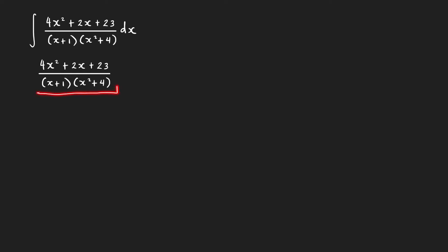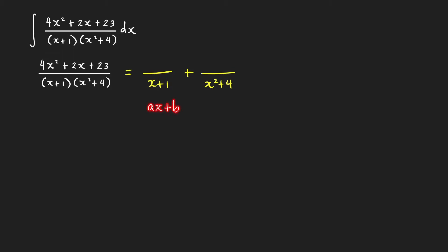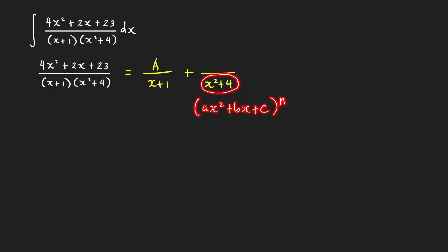What is the form of the partial fraction decomposition? Because we have distinct linear and quadratic factors in the denominator, each of these factors will correspond to just one fraction in the partial fraction decomposition. So we're going to have something over (x + 1) plus something over (x² + 4). If the denominator is a linear expression in the form ax + b, then the numerator must be a constant — let's say A. And if the denominator is an irreducible quadratic expression like ax² + bx + c, then the numerator will be a linear expression in the form Bx + C.